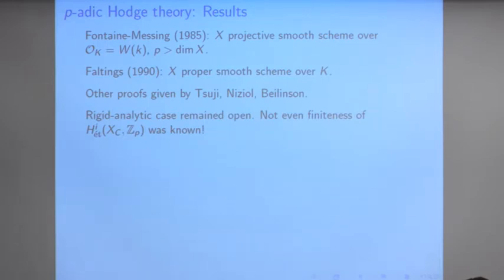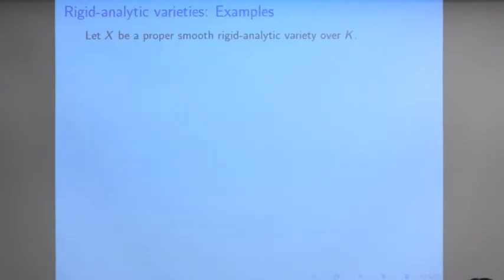Do you assume properness or something? I will assume properness in a second, yes. Before coming to results, let me discuss to what extent the examples I gave in the complex case also work in the p-adic case. In what follows I want to consider X as a proper smooth rigid analytic variety — that's the p-adic analog of a compact complex manifold.